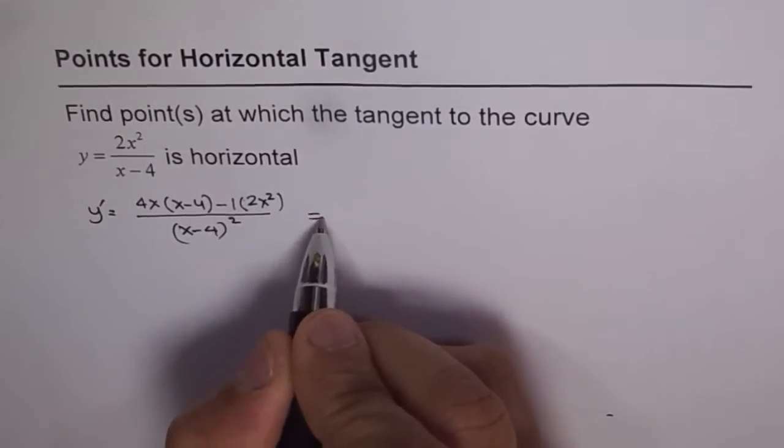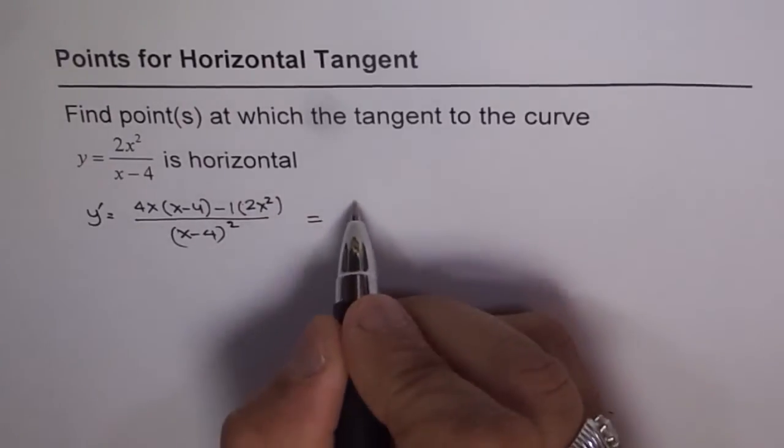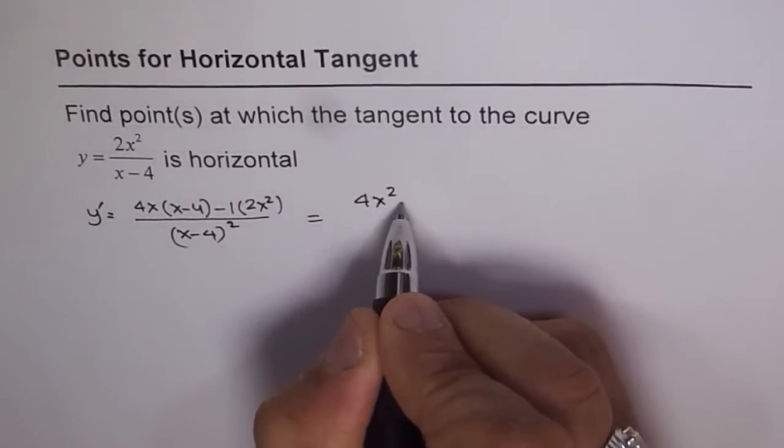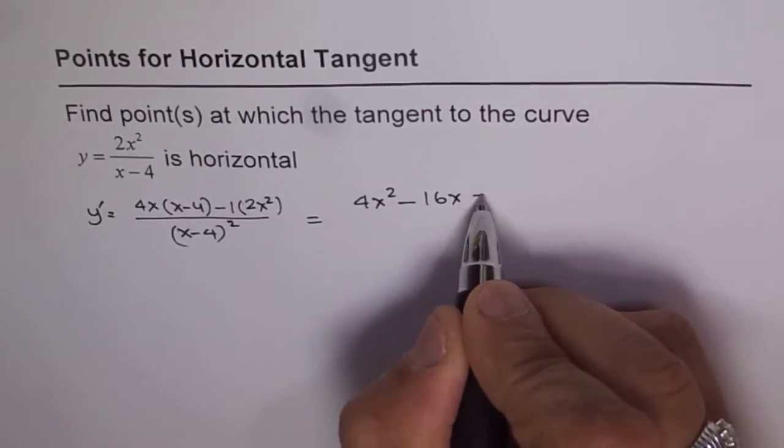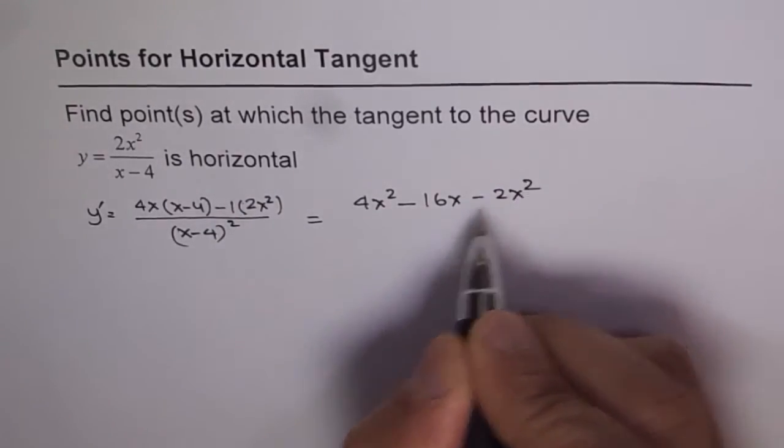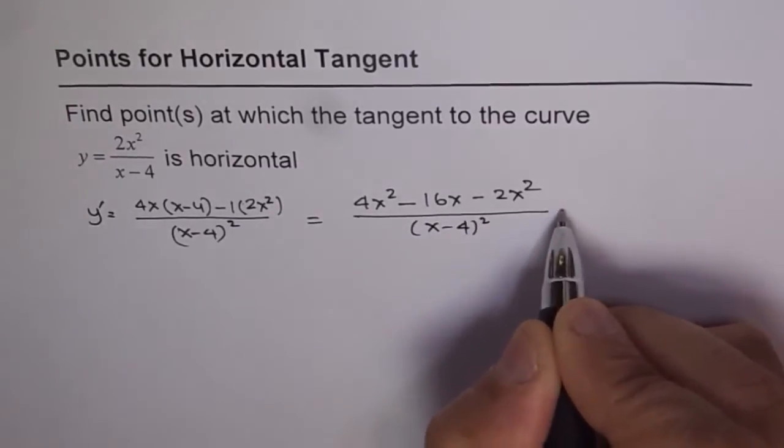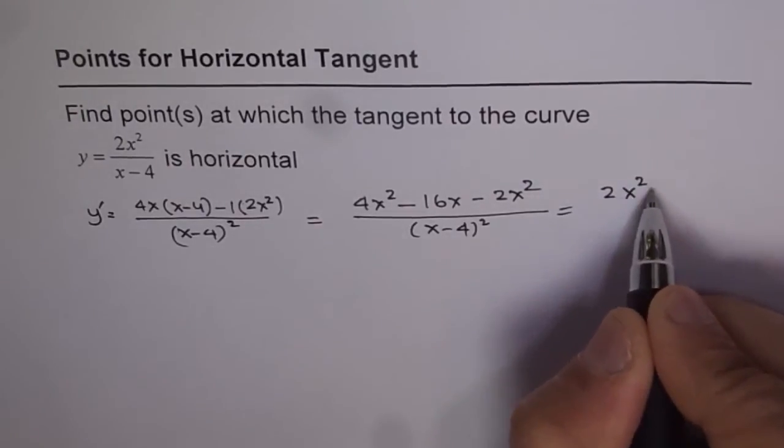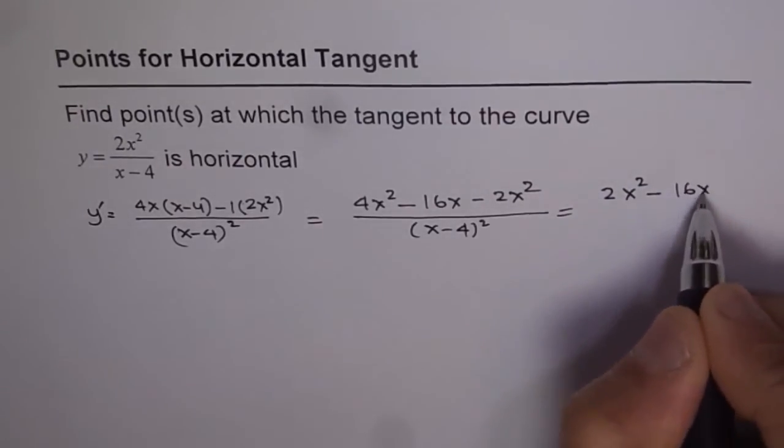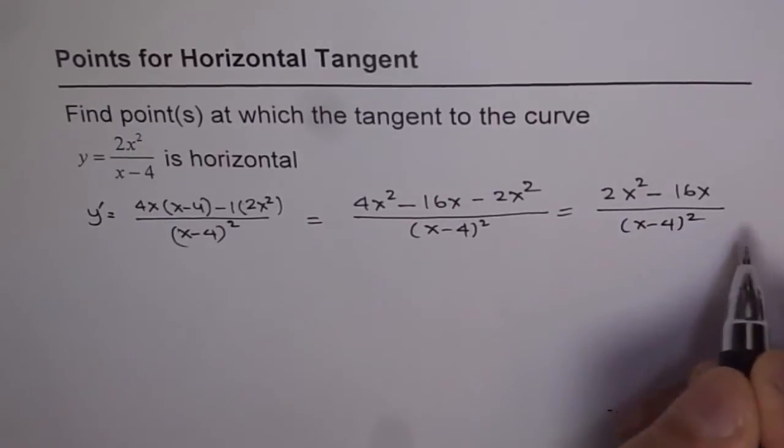So that is what we get. Now this is equal to, we can simplify this. So we get 4x square minus 16x and this is minus 2x square over x minus 4 whole square. So this can further be simplified as 2x square minus 16x over x minus 4 whole square.